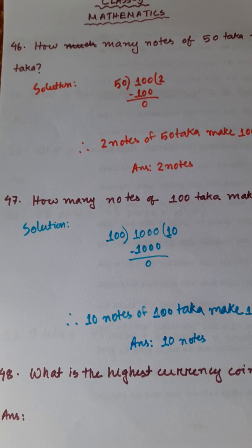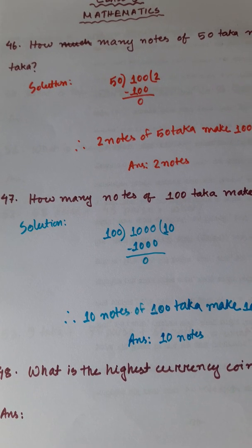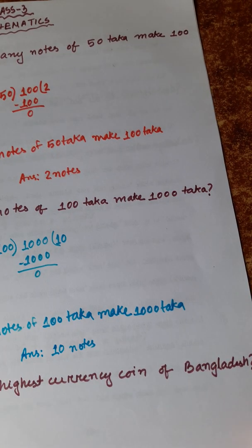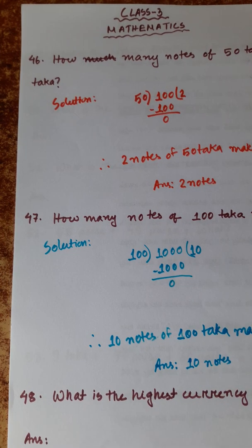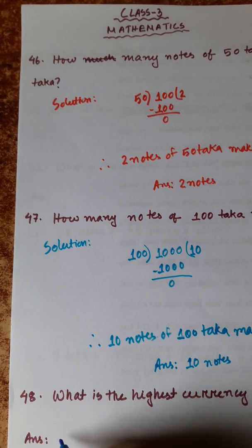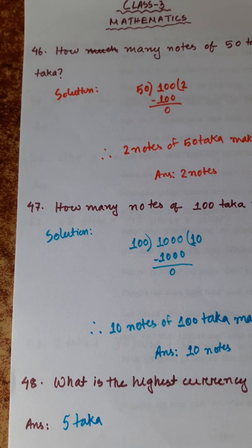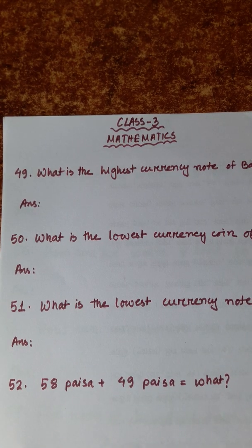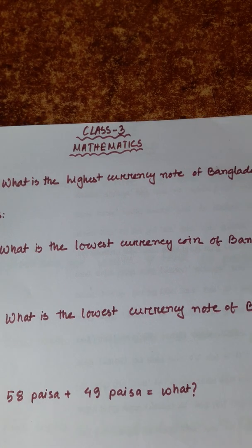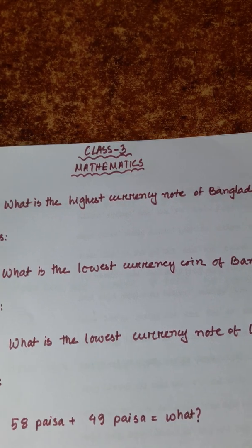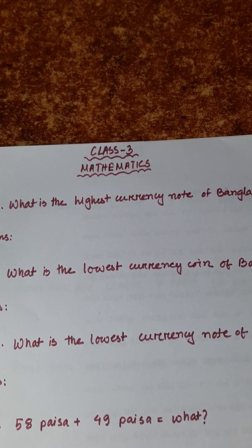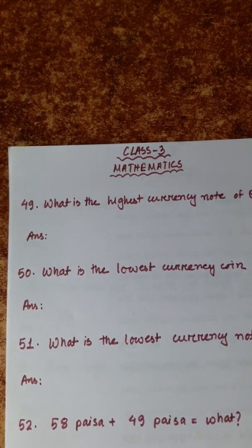Number 48: What is the highest currency coin of Bangladesh? The highest currency coin of Bangladesh is 5 taka. There is no coin higher than 5 taka in Bangladesh. Number 49: What is the highest currency note of Bangladesh? The highest currency note of Bangladesh is 1000 taka.